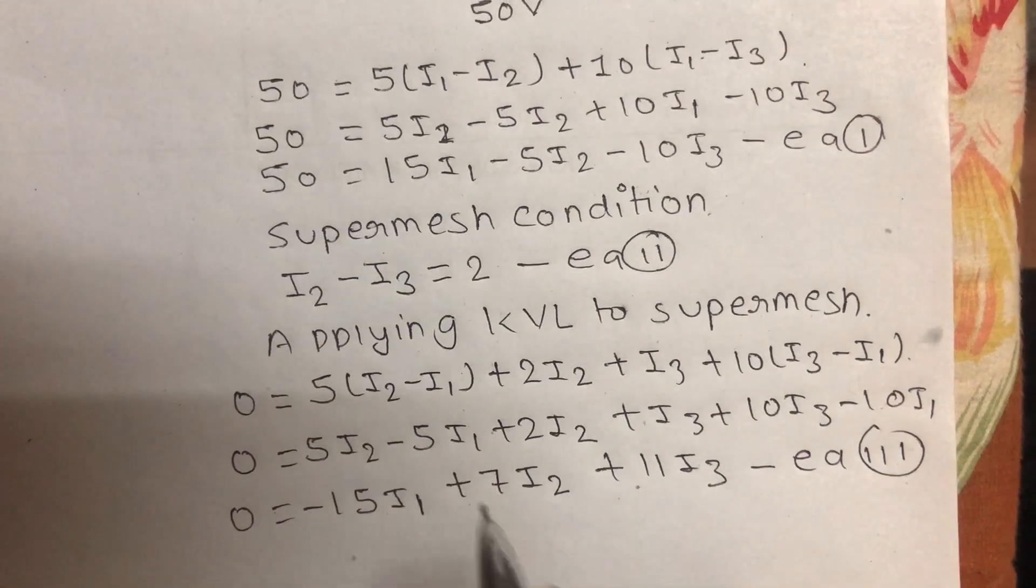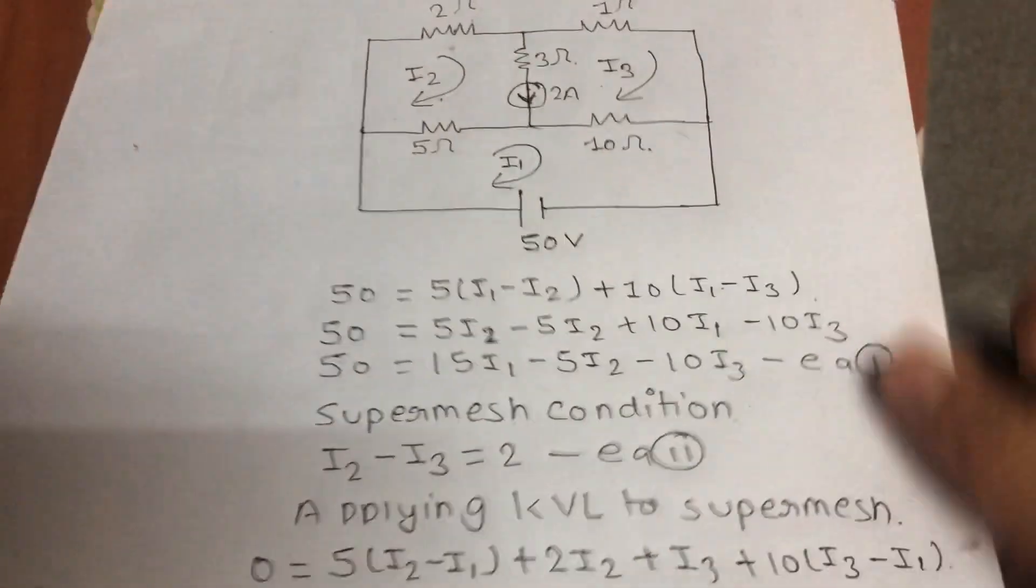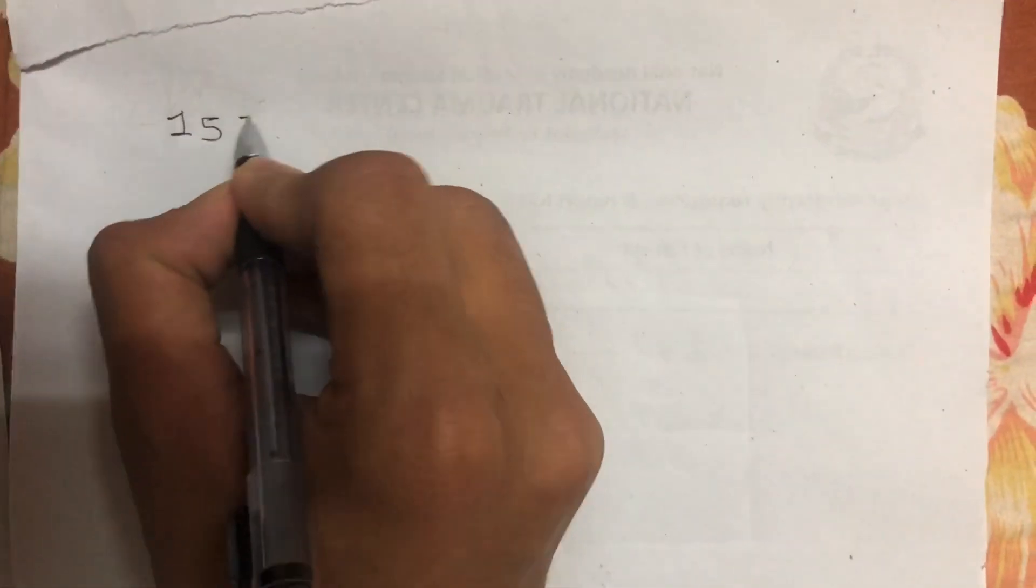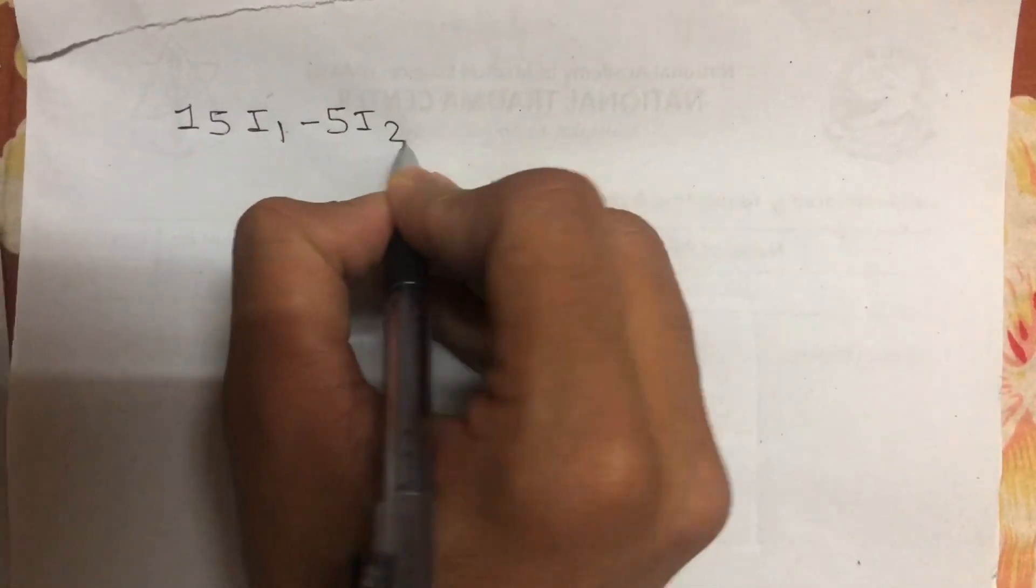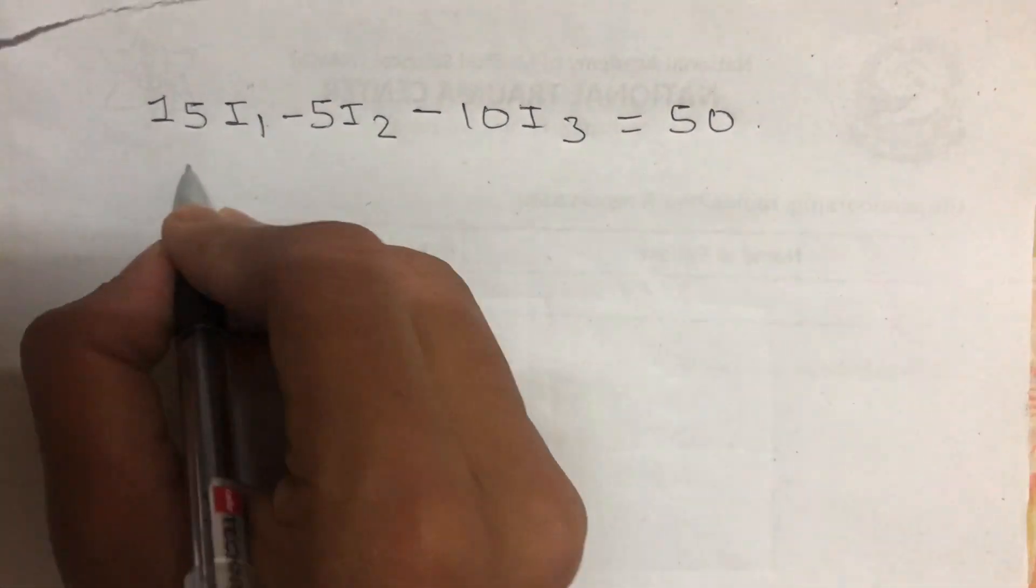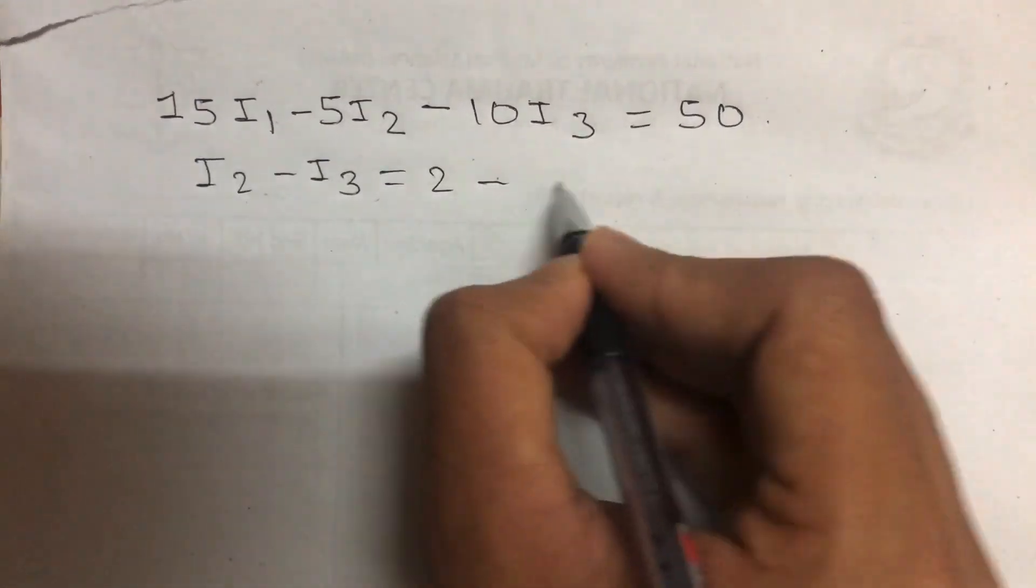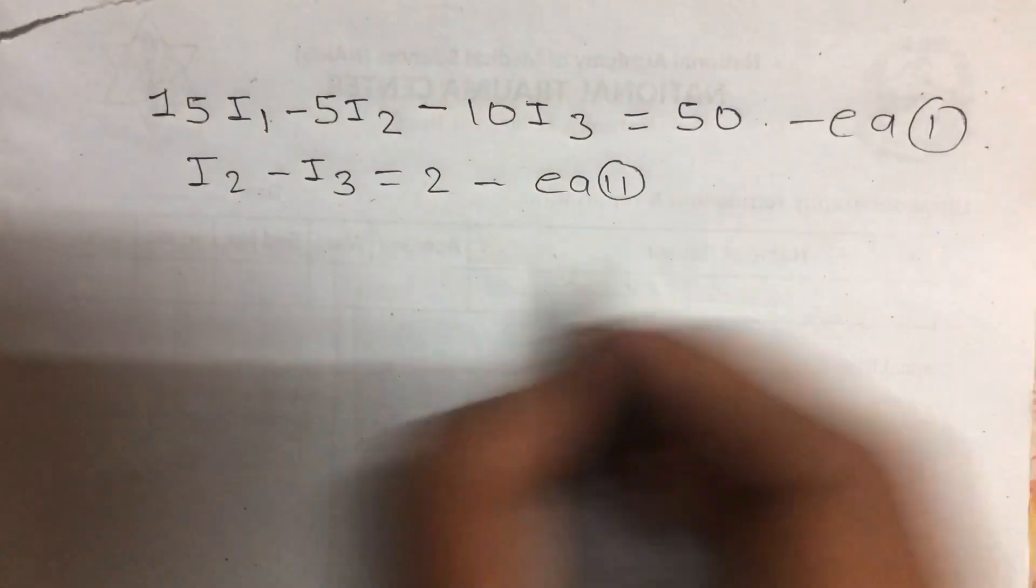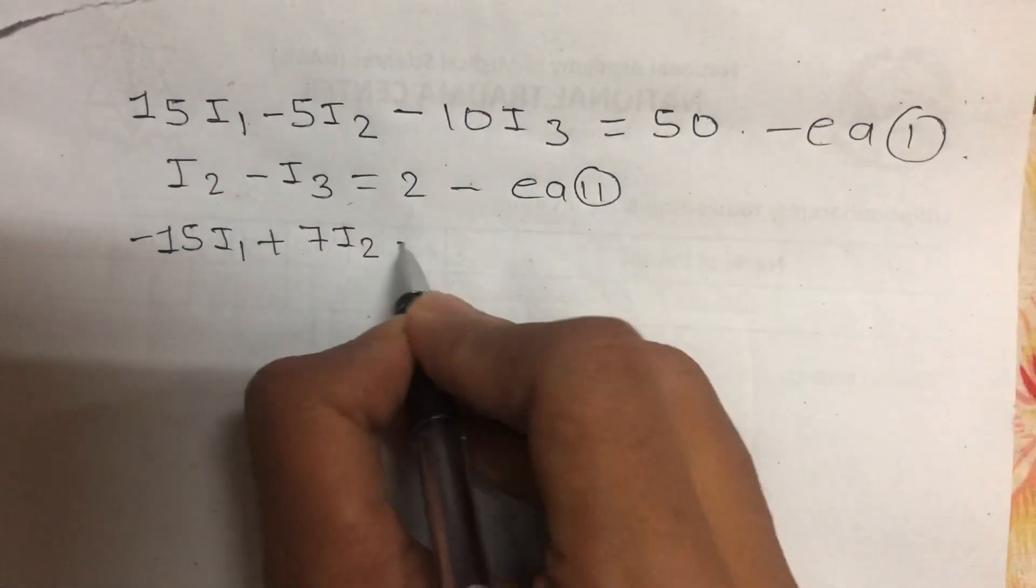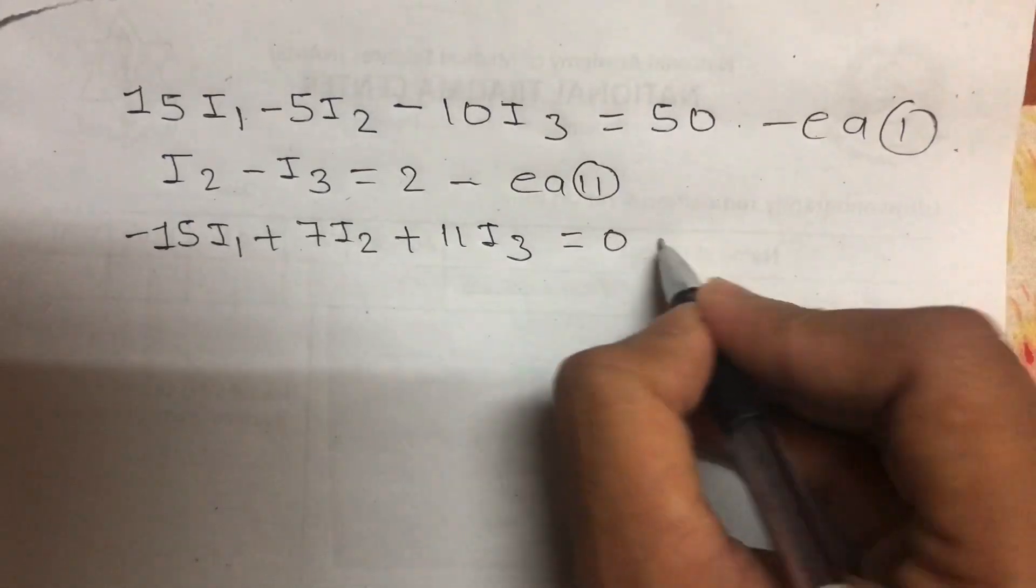Now I will write the three equations in matrix form. First equation: 15I1 minus 5I2 minus 10I3 equals 50. Second equation: I2 minus I3 equals 2. Third equation: minus 15I1 plus 7I2 plus 11I3 equals 0.